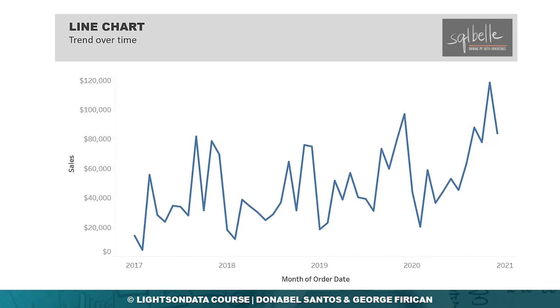George has covered this extensively in a previous lesson. With a line chart like this, there is an assumption that lines are continuous and there is a gradual transition from one point to the next.